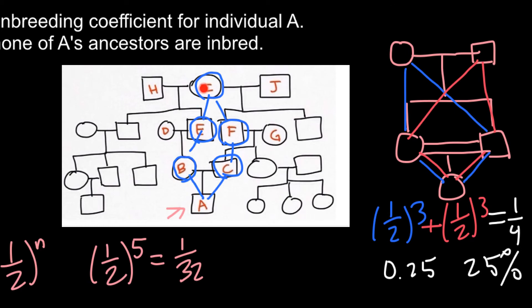So if we see that our proband's parents have only one common ancestor, that means we have only one loop. And if we would see that there are two common ancestors of the parents of the proband, in this case we have to add probabilities for each loop in order to find the inbreeding coefficient.